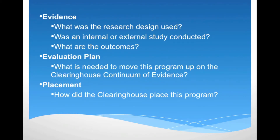The evidence section summarizes the research design method used, whether it be a randomized control trial or a quasi-experimental design. Also, another important feature of this section is whether or not the study or studies were conducted by the program developer or replicated by an external source. Positive and negative outcomes of the studies are also included. Under evidence on the Strong African American Families fact sheet, it states that a randomized prevention trial found that African American families participating in SAAF experienced increased communicative parenting practices, increased youth protective factors which have been found to decrease the likelihood of alcohol use, reduce initiation of alcohol use, and slow the use of alcohol over time.